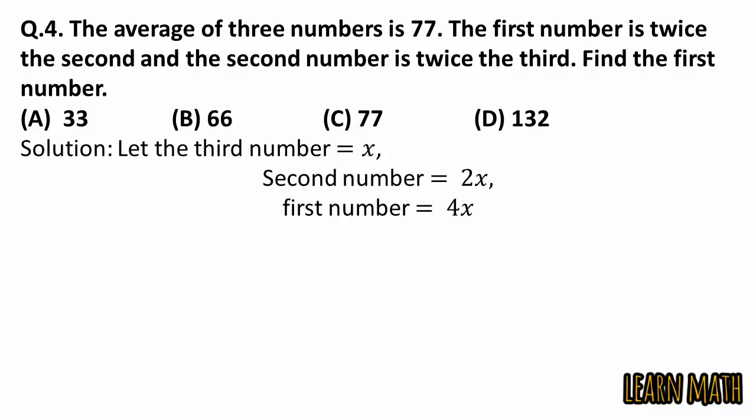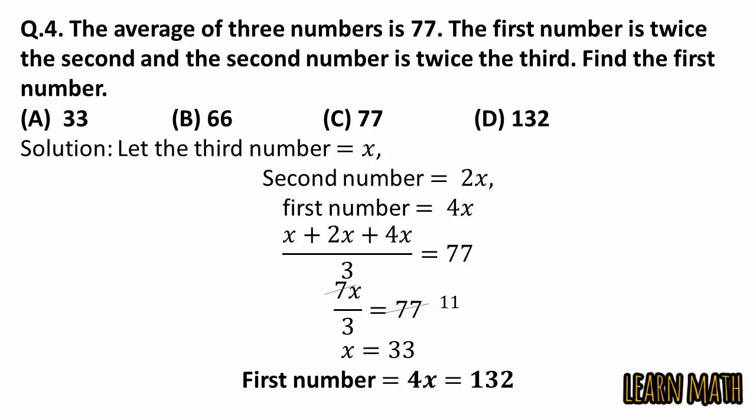Now average of these three numbers will be X plus 2X plus 4X divided by 3, and according to the question it is equal to 77. Simplify this, we will get 7X divided by 3. Cancel 7 with 77, 7 into 11 is 77. Multiply 3 with 11, and we will get X is equal to 33. To find the first number, 4 into 33 is equal to 132. And the correct option is option D.